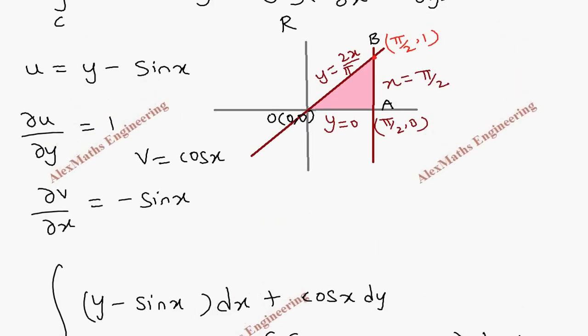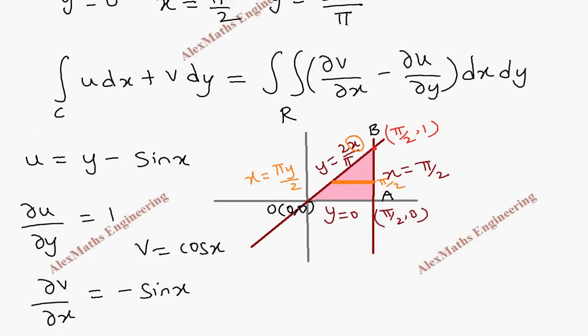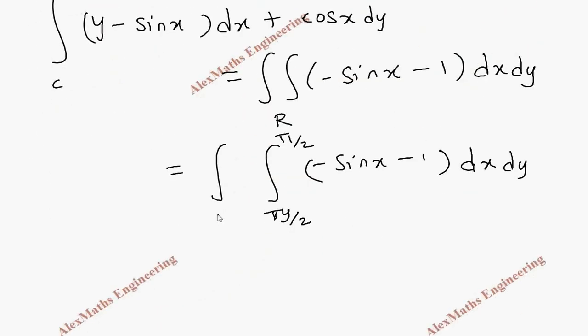For this we have to take the limit. When we take the x limit we are going to consider the horizontal strip. It starts from x. From here I have to take what is x. So x is equal to pi y by 2 till pi by 2. This is our limit of x. So pi y by 2. Let's write it here. Double integral. Pi y by 2 till pi by 2, minus sin x minus 1, into dx. And the vertical strip starts from 0 and end at maximum y value is 1. So this is 0 and maximum is 1 which is here. So 0 to 1.